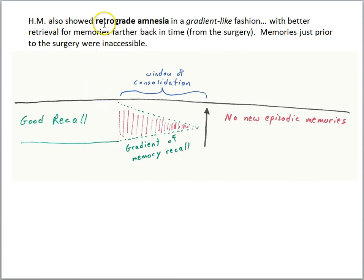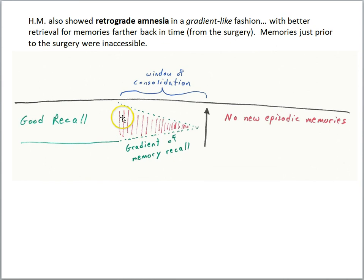Interestingly, H.M. also showed retrograde amnesia in a gradient-like fashion, with better retrieval for memories farther back in time from the surgery. Memories just prior to the surgery were inaccessible — things that happened to H.M. just before the surgery could not be retrieved. However, when scientists asked him to retrieve more remote memories, he had better and better success in a gradient-like fashion. This suggested that some kind of memory processing was happening — recently learned information had to undergo further processing to be retrievable without a hippocampus. In the previous lesson we called that system consolidation: the memory was being reorganized in a way that the hippocampus was no longer needed for its retrieval.